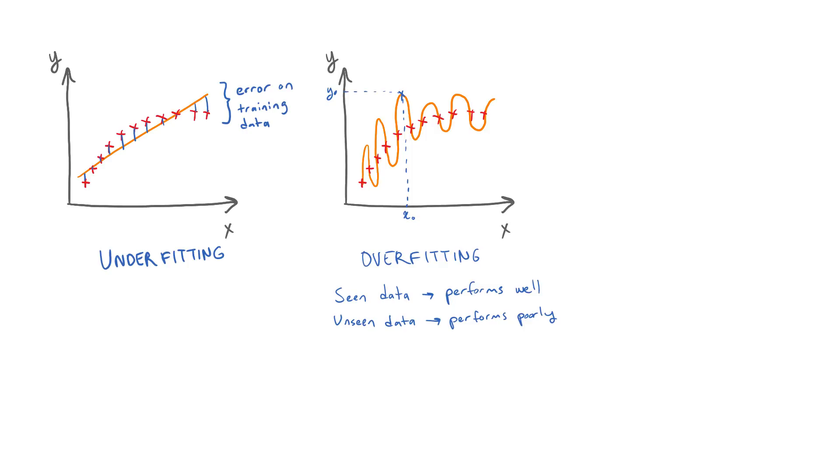A better fit for this data will look something like this function, which has a capacity somewhere between these two. It has low bias and low variance, therefore fits the training data closely while generalizing seemingly well to unseen points.